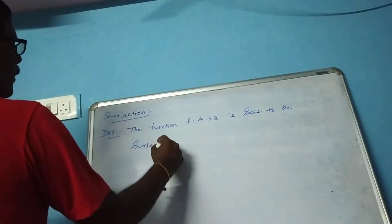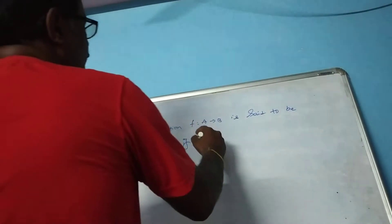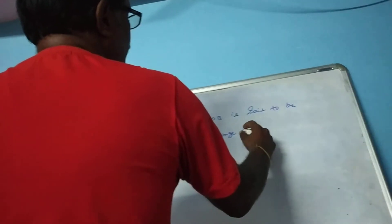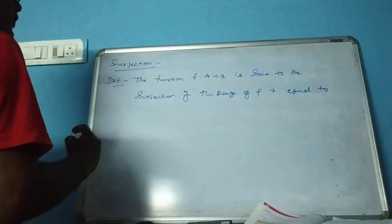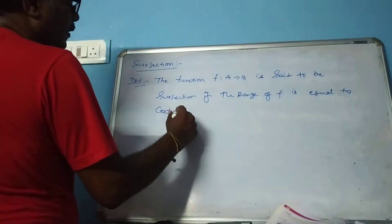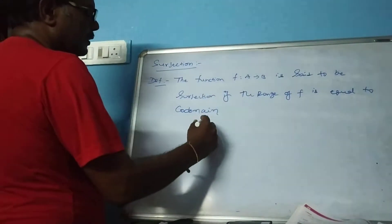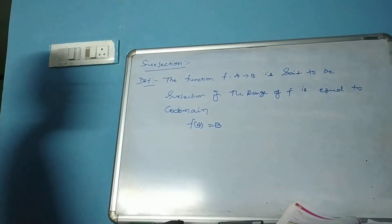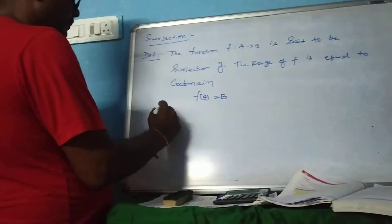If the range of F is equal to the co-domain, that is, F of A is equal to B.